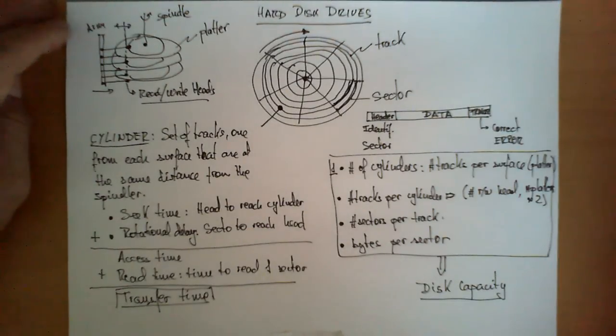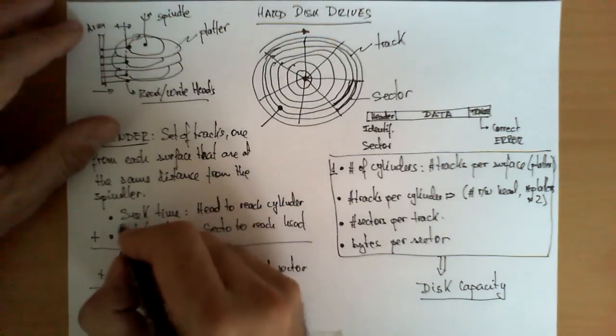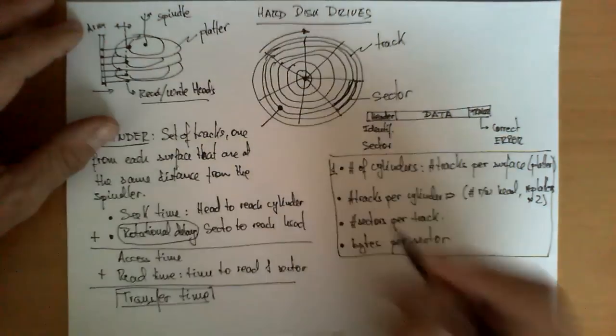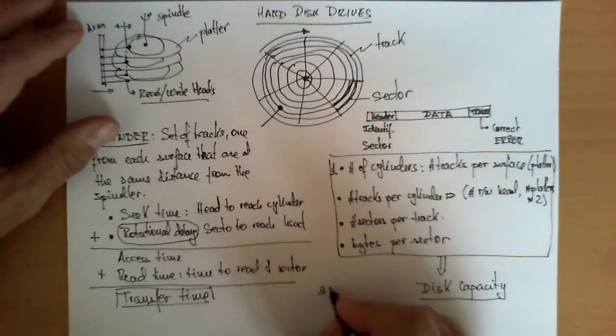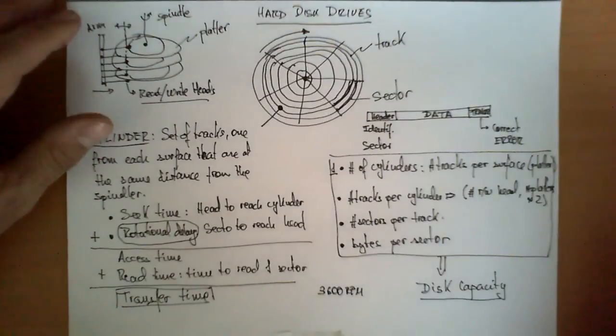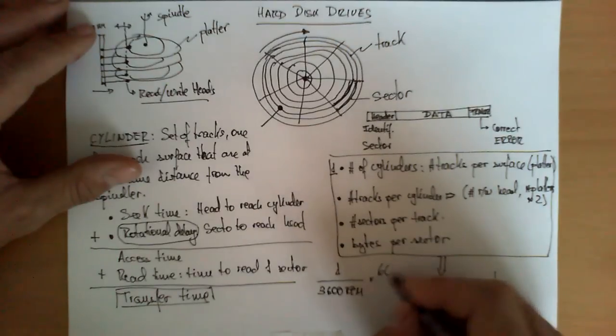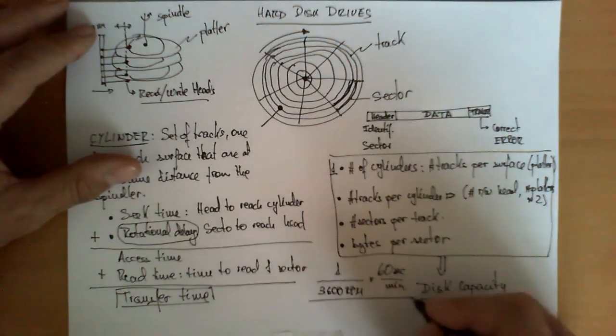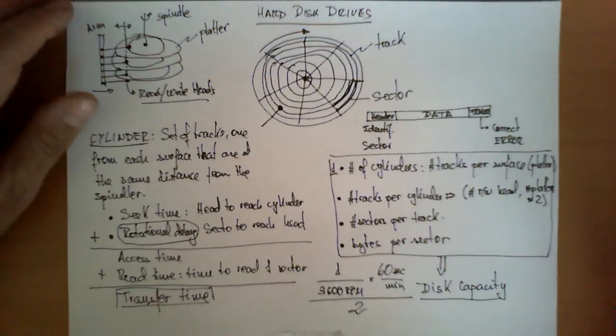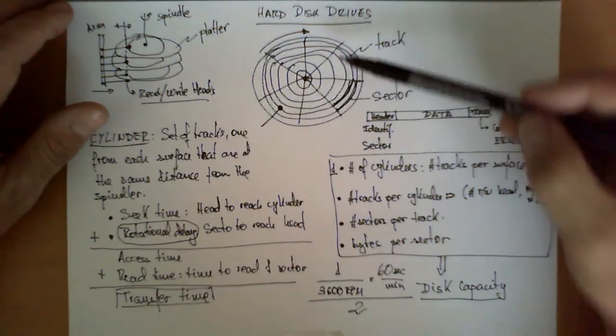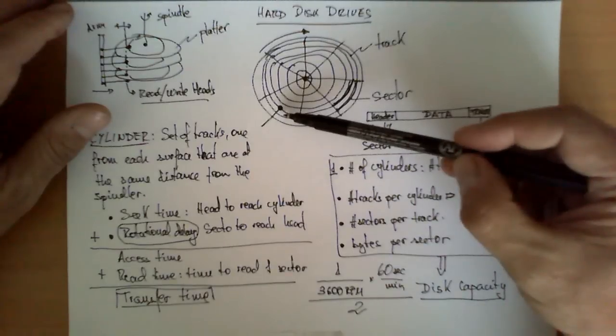Now, to give an example of the type of magnitudes we are talking about here, let's focus on the rotational delay. Let's make an example. Suppose there is a disk that is spinning at 3600 RPM. With a very simple operation, we translate this, take the inverse, multiply by 60 seconds per minute, and divide by 2, and this corresponds precisely with the time it takes a sector to perform half a rotation.